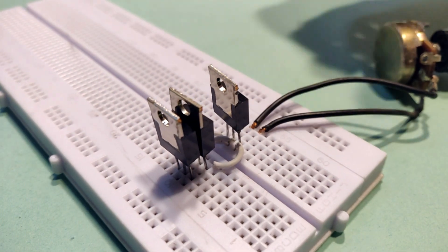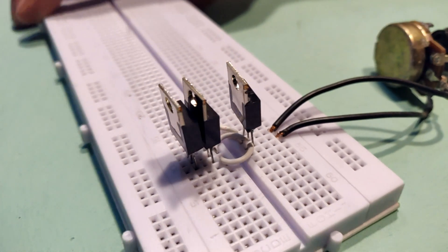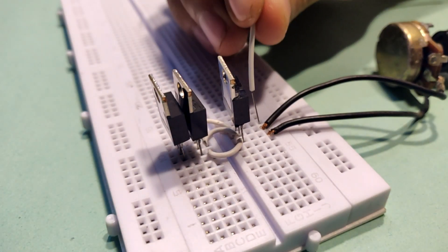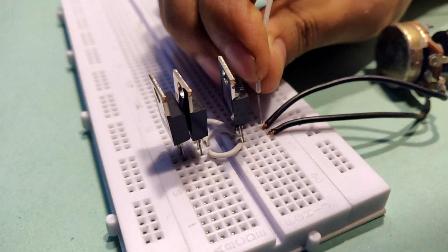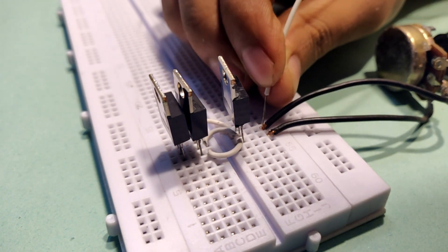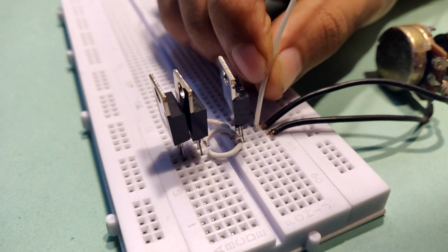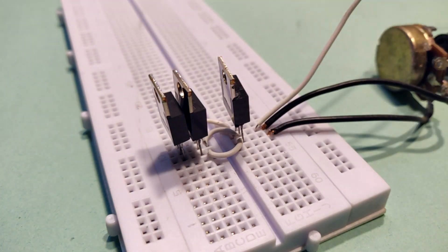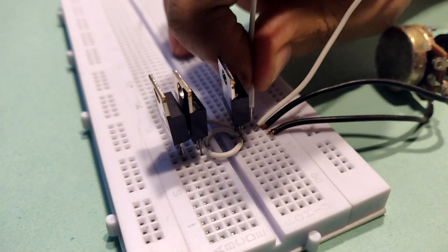The two terminals from the variable resistor will be connected to the common collector and common base terminals of the power transistors. After that, two more wires will be connected - one to the common collector and the other to the common emitter.